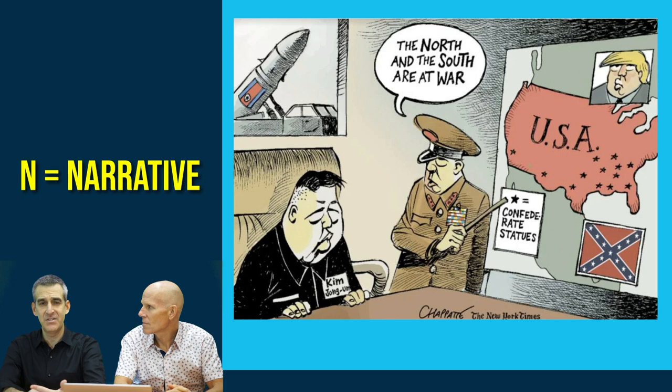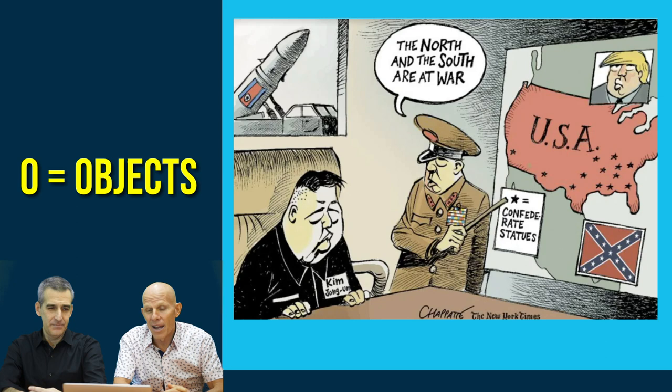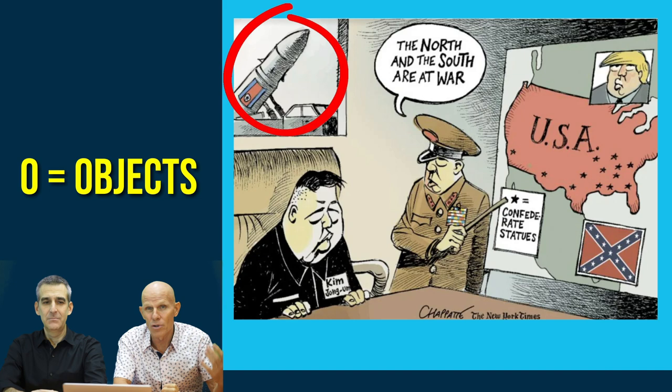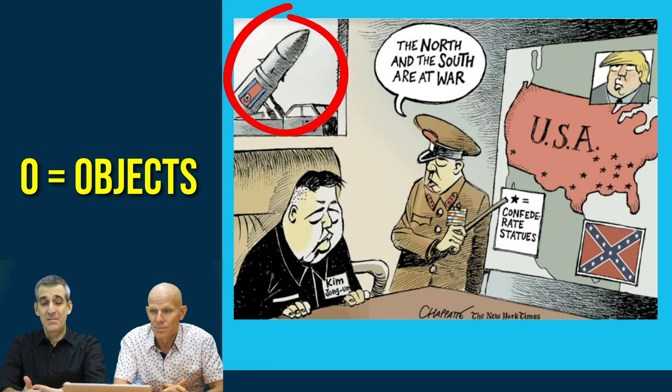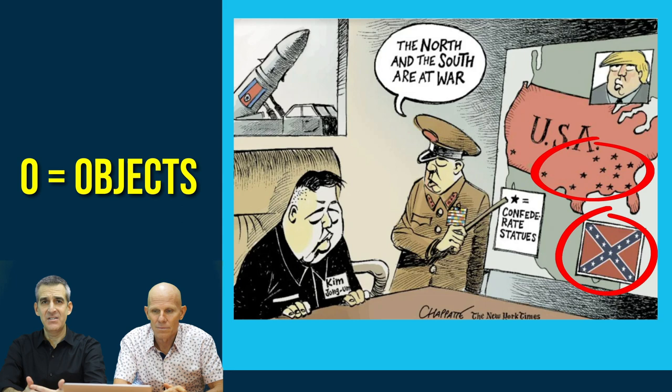It's like they're in a war room and the general is briefing Kim Jong-un about what's going on. Moving to O — objects and symbols — in the background there's a very strong symbol: a missile pointed in a threatening way, referencing nuclear weapons and warfare. I'd also want to talk about the symbol of the stars, whether on the Confederate flag or on the map representing Confederate statues in the southern United States. That seems to be a key symbol as well.